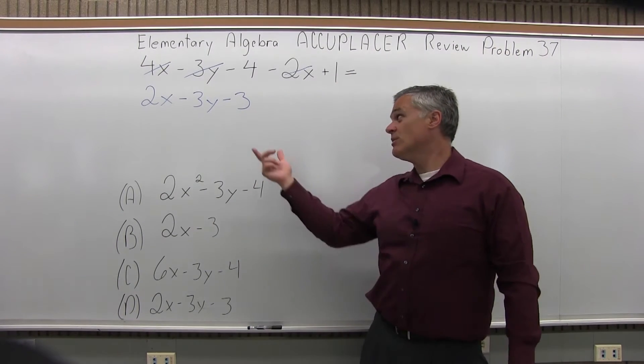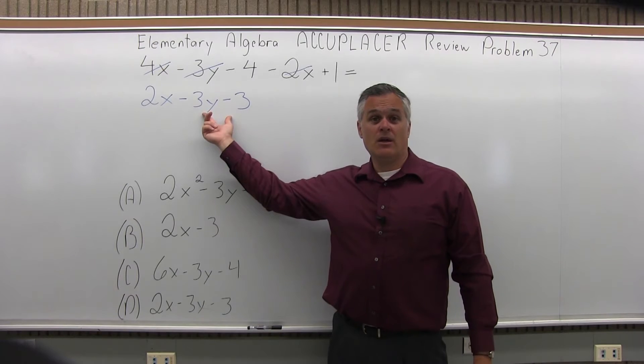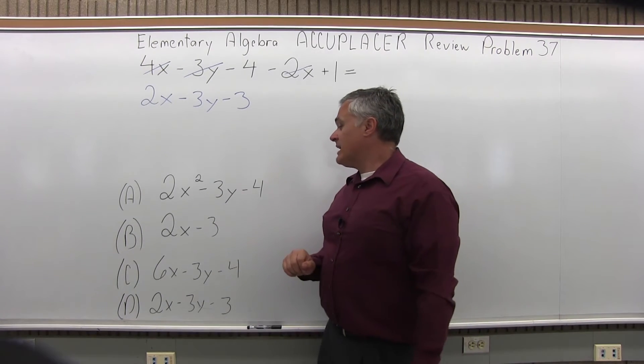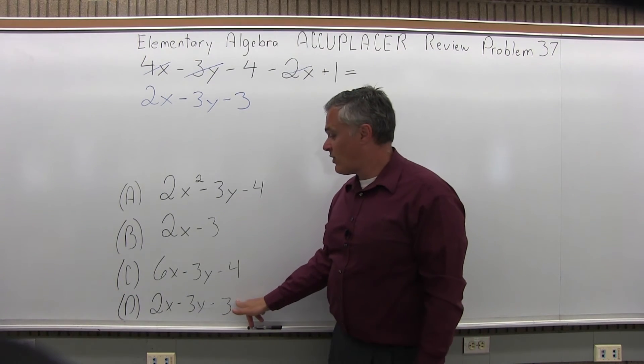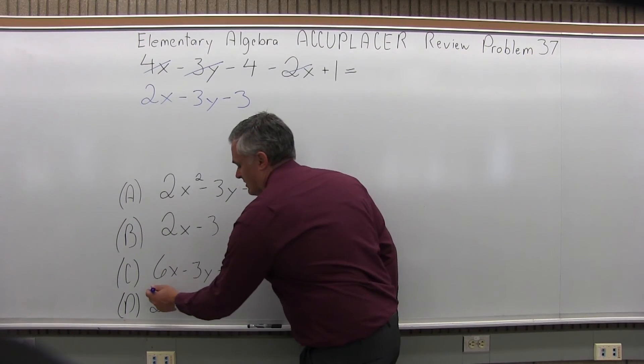So my final answer is 2x minus 3y minus 3. Now, as I look at my possible options, my answer is a perfect match for option D. So that's the answer, option D.